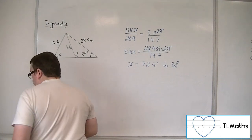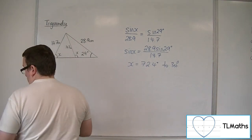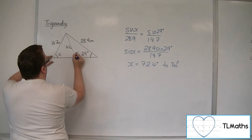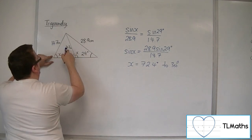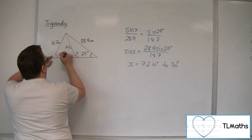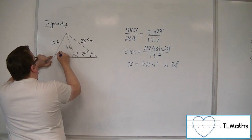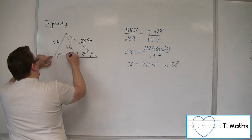So, the problem here is that this angle and this angle, because those two sides are the same length, must both be 72.4 degrees to three significant figures.